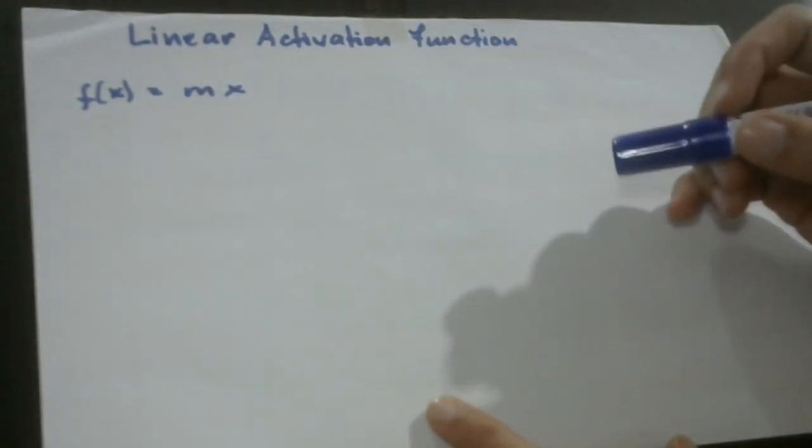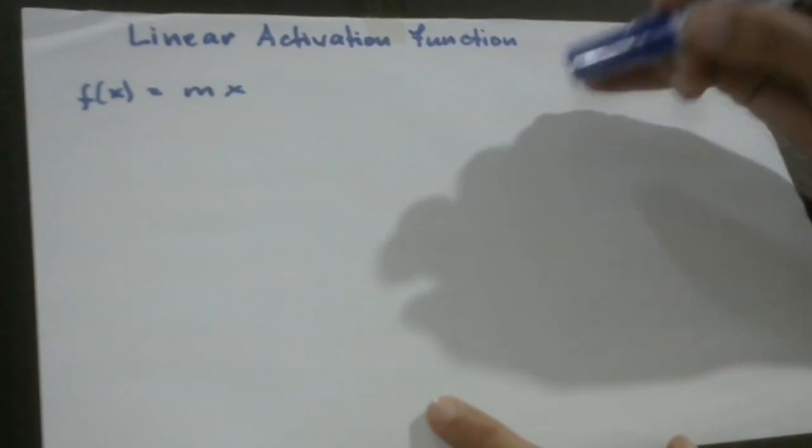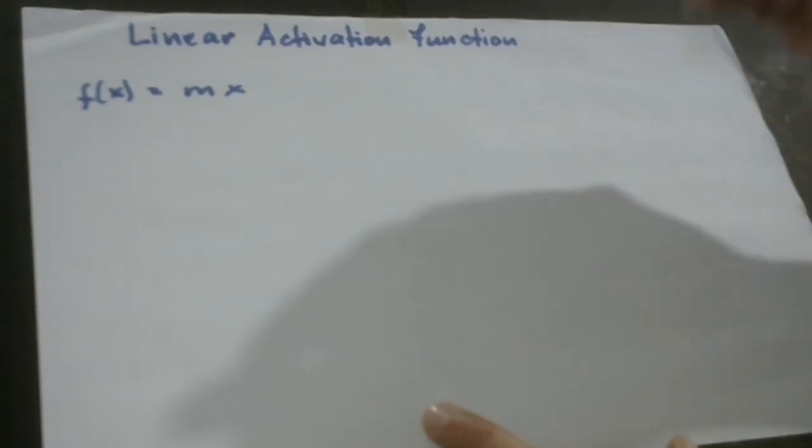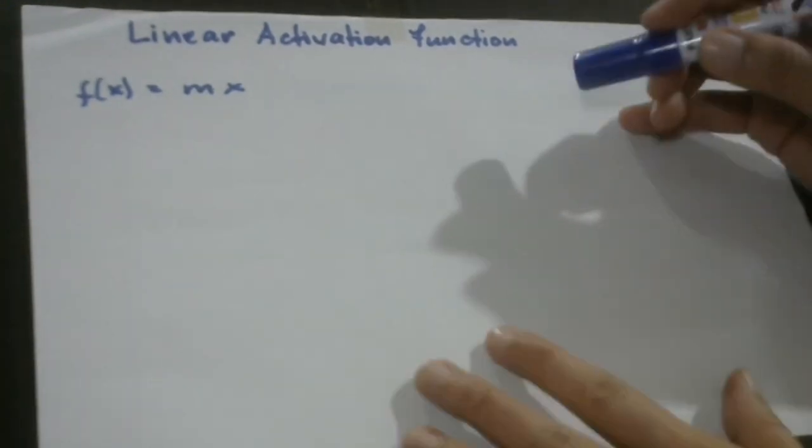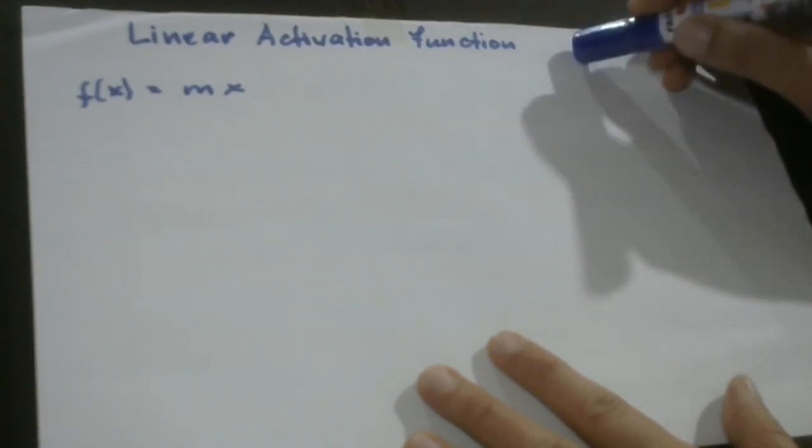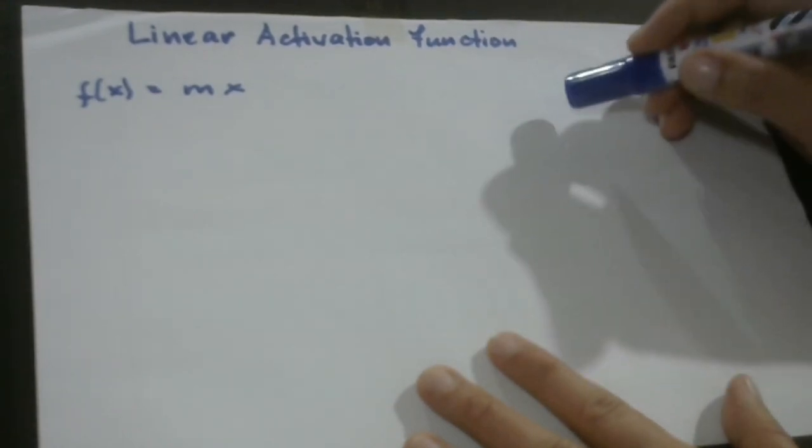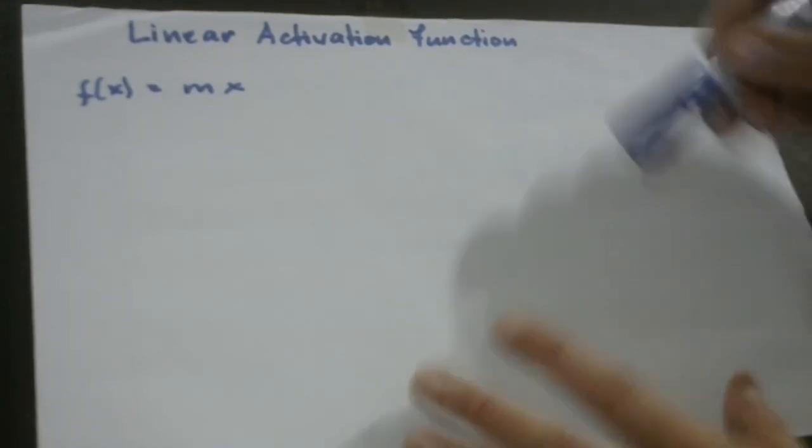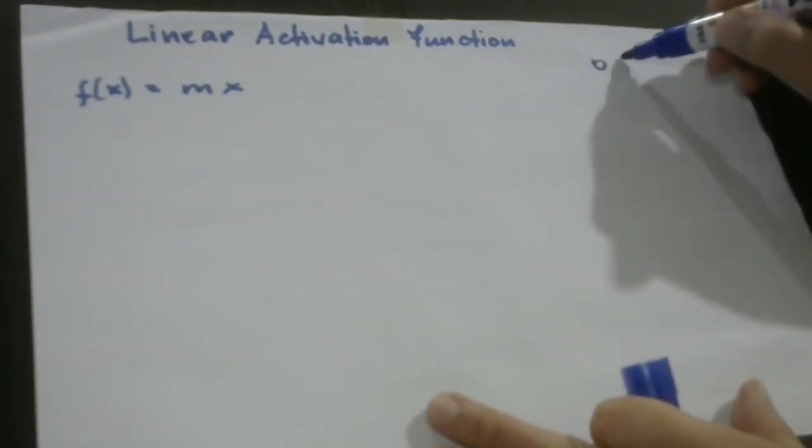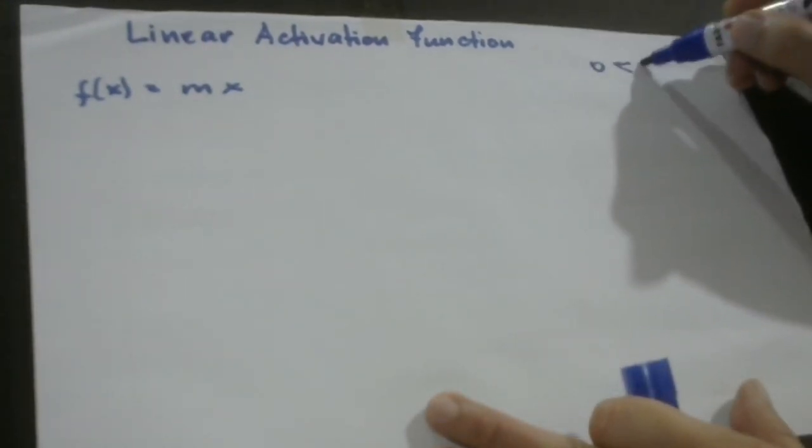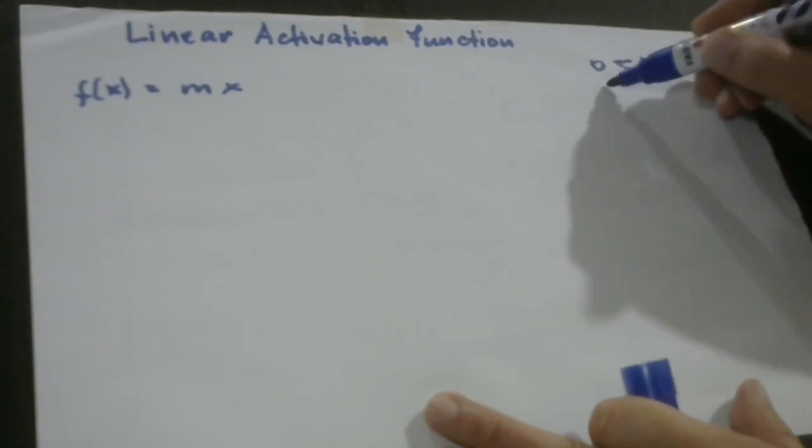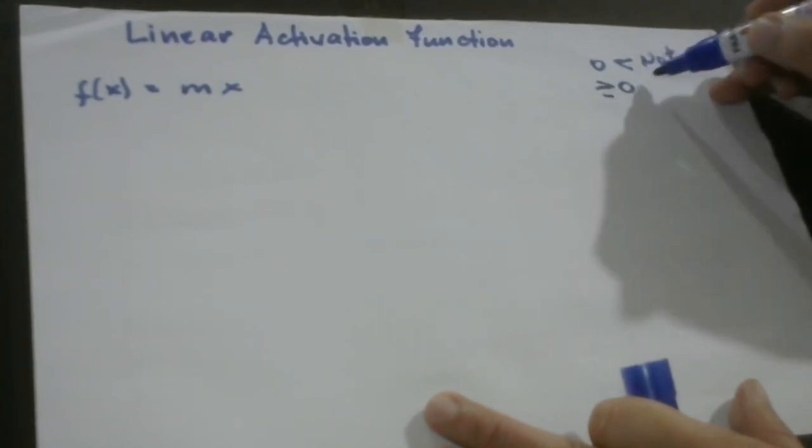In binary step function, we said that a neuron is either firing or not firing. So we said that there would be a certain threshold for a certain neuron to fire and a certain neuron for not to fire. So for example, there would be 0 or less than 0 for it to not fire, and equal to or above 0 for it to fire.